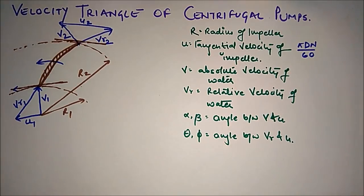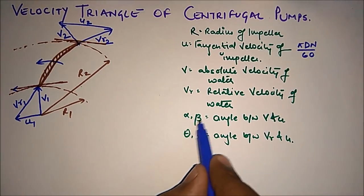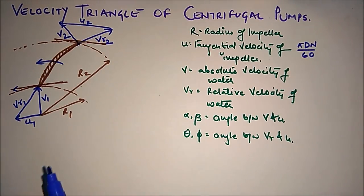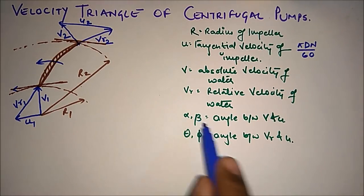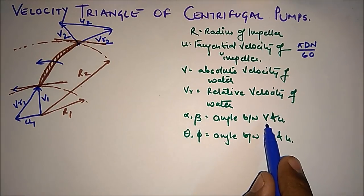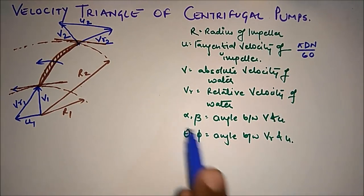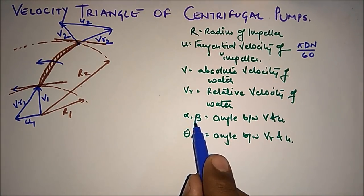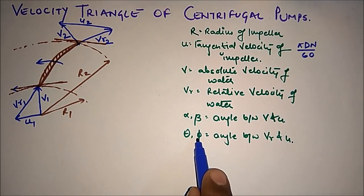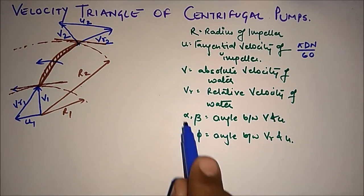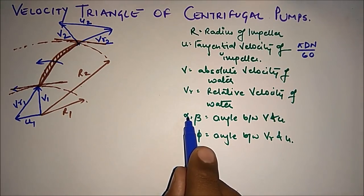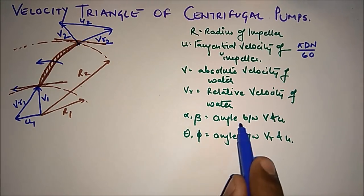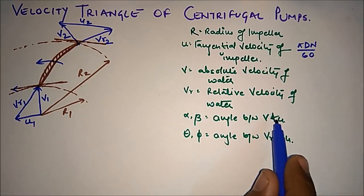Now let us look at the angles. Alpha and beta are the angles between V and U: alpha is for inlet and beta is for outlet. Theta is for inlet and phi is for outlet. So alpha is the inlet angle between V and U.